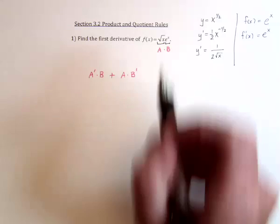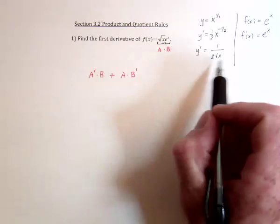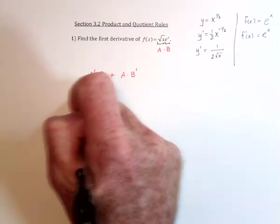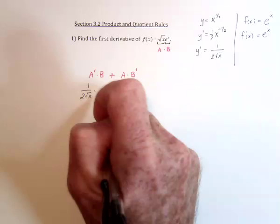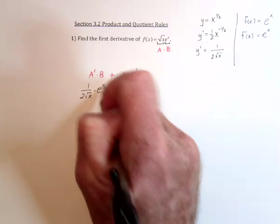So take the derivative of the square root function, which we did right there, so 1 over 2 times the square root of x, and then leave the second function alone, e to the x.